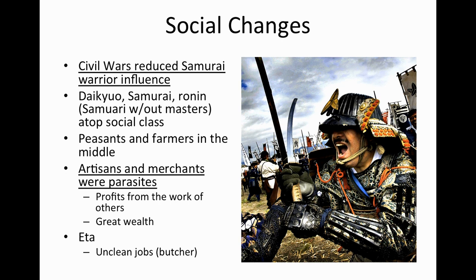Under the Tokugawa government, the samurai warrior lost some influence. While still high in social class, civil wars and gunpowder reduced their power — the shogun had significant military strength to defeat samurai in battle. Below the warrior class were peasants and farmers. Merchants were considered parasites — looked down upon for making profits off the backs of others. Though very wealthy, they had little respect or influence. At the bottom were the eta, those who performed unclean jobs, similar to the untouchable class in India.